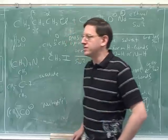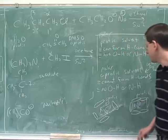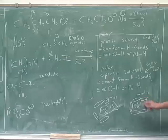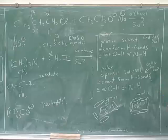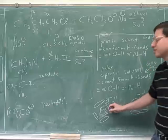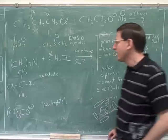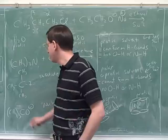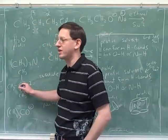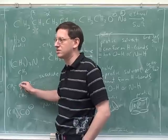The third place steric hindrance can come from is the solvent — the solvent can also provide steric hindrance. So steric hindrance can come from the substrate (primary, secondary, or tertiary), from the nucleophile if it's too bulky, and from the solvent. This explains why aprotic solvents are better, why less bulky nucleophiles are better, and why less bulky substrates are better — all because they provide less steric hindrance.